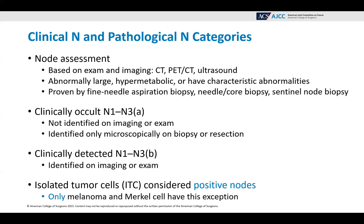For clinical N and pathological N categories, the node assessment is based on exam and imaging, usually CT, PET-CT, or ultrasound — looking for abnormally large, hypermetabolic, or characteristically abnormal nodes. This helps determine the node assessment, which can then be proven by fine needle aspiration biopsy, needle core biopsy, or sentinel node biopsy.